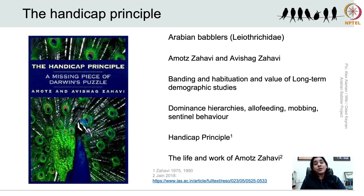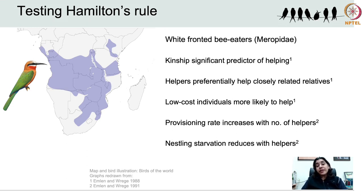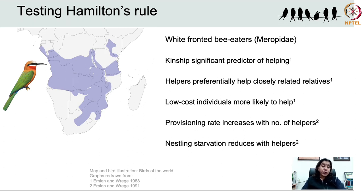Their legacy continues with the Arabian babbler project and through their many contributions to our understanding of social behaviour of birds. Bee-eaters have highly variable breeding and social systems, ranging from species that exist as solitary pair-nesting birds in nuclear families to large colony nesters. Some solitary nesters in the bee-eater group exhibit cooperative breeding whereas others do not. The same is true for colony-nesting bee-eater species. This family thus offers a good model system for comparative studies of social organisation in birds.